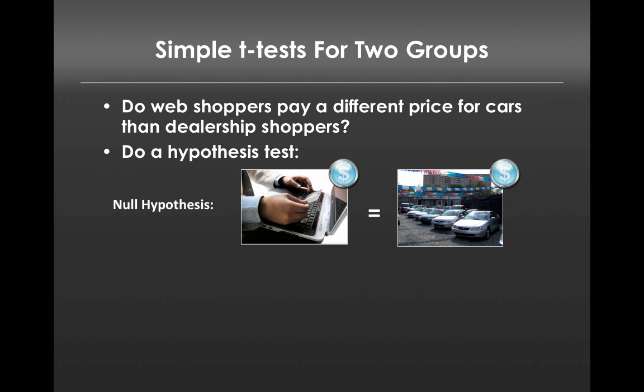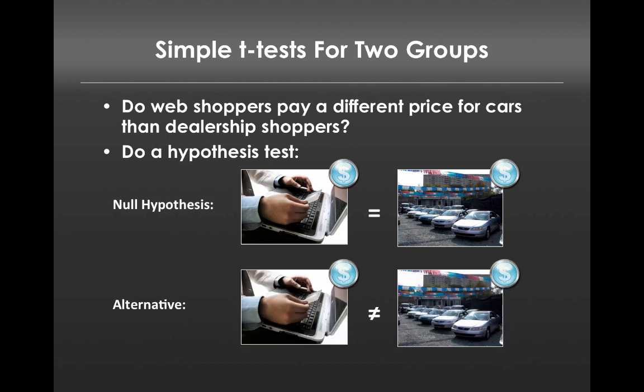Our t-test will allow us to test whether we can reject this null hypothesis and instead accept an alternative hypothesis, which is that they pay different prices. If we saw that a p-value for this test was less than 0.05, we would conclude that the prices paid by those online are different than the prices paid by those in dealerships.